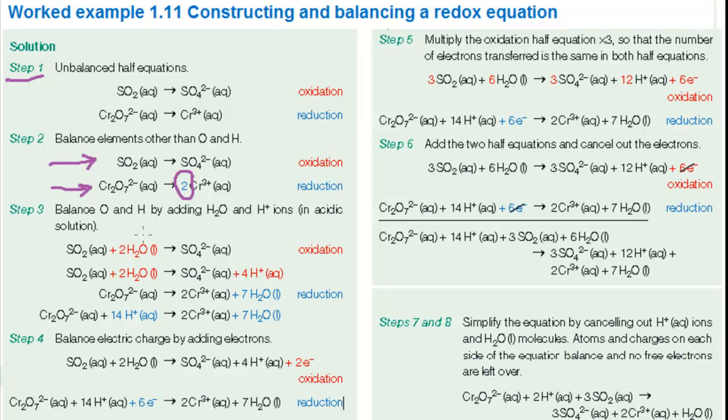Now balance oxygen and hydrogen atoms in step 3. This is the tricky bit and requires a bit of practice. First you balance oxygen by adding water and then since the reaction takes place in acidic solution you balance hydrogen by adding H plus ions.